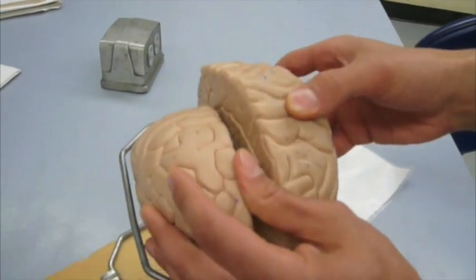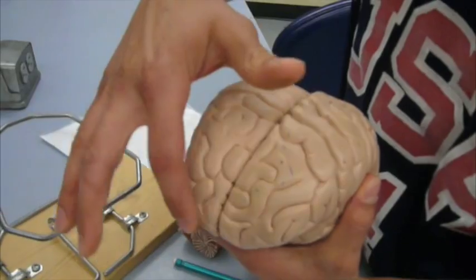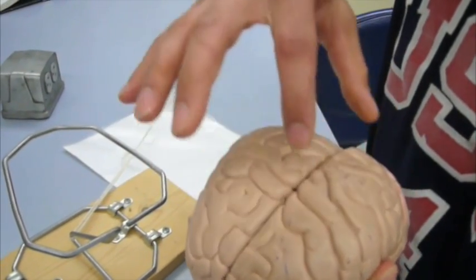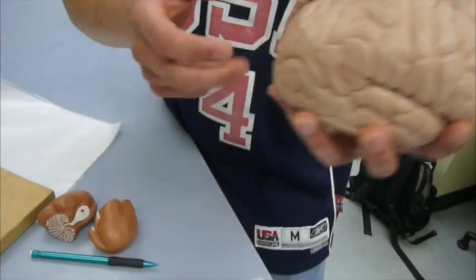Now we're going to go over the different lobes of the brain. We have the frontal lobe, parietal lobe, temporal lobe, occipital lobe.